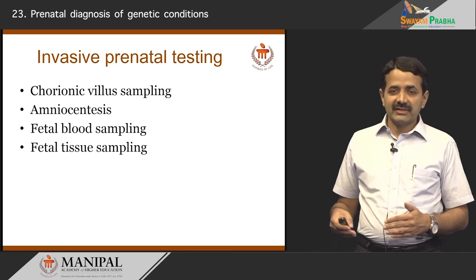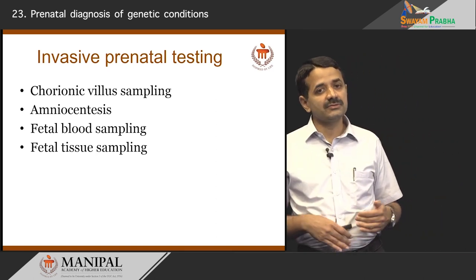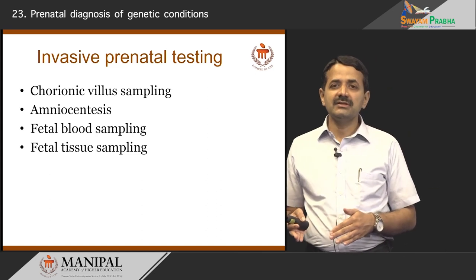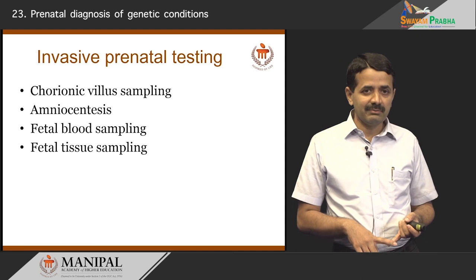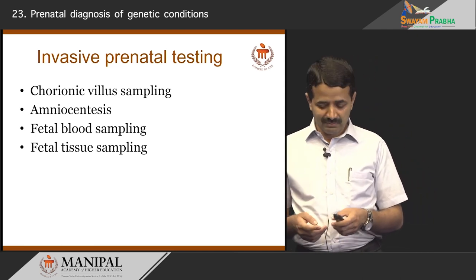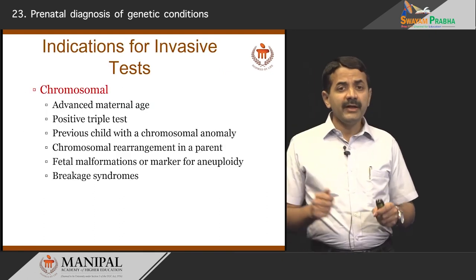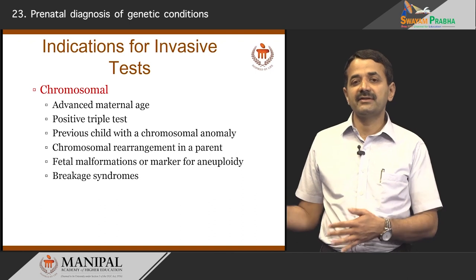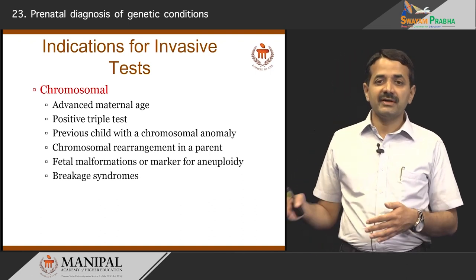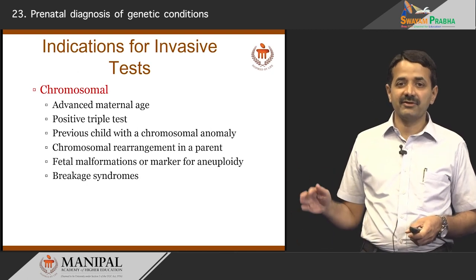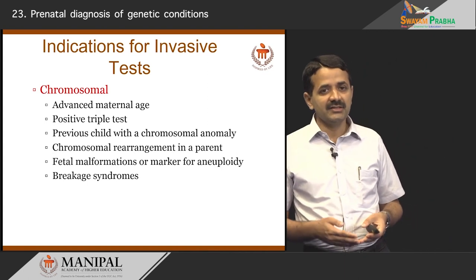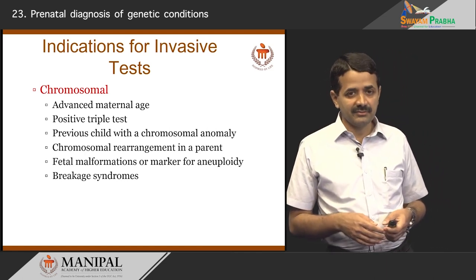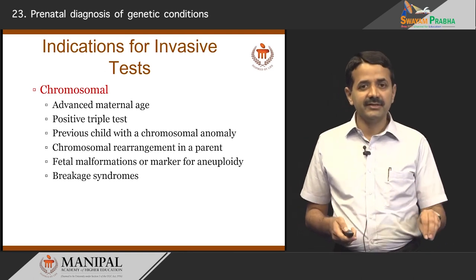I will now discuss invasive prenatal testing. Invasive testing involves taking samples from the fetus either by chorionic villus sampling, amniocentesis, fetal blood sampling, or fetal tissue sampling. Invasive testing is performed to study chromosomes in the fetus — for example, in advanced maternal age (35 years or more at expected delivery), positive screening tests, a previous child with a chromosomal anomaly, chromosomal rearrangement in a parent, fetal malformations, or markers for aneuploidy by ultrasound.